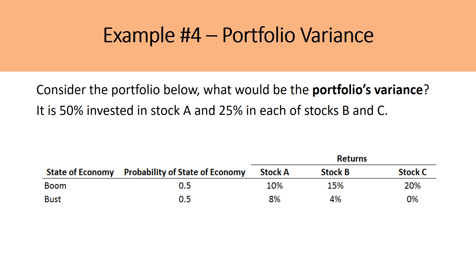In example four, consider a portfolio that is 50% invested in stock A and 25% each in stocks B and C. There are two states in the economy — boom and bust — each with 50% probability. What a lot of students do incorrectly is find the variance of each stock and then weight them. Instead, you need to simplify the problem: merge the three stocks' expected returns in each state to find a single expected portfolio return for the boom period and a single expected portfolio return for the bust period.